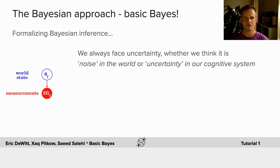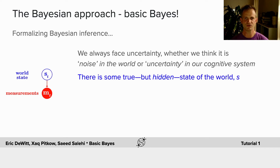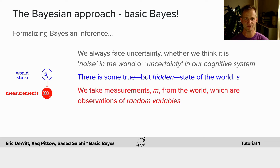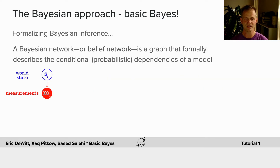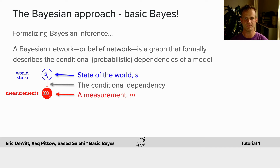We want to think about the fact that we always face uncertainty. This uncertainty might be noise in the world or uncertainty in our cognitive system, but there's always some true but hidden state of the world — we'll call it S. We can take measurements from the world which are observations in the form of random variables. What we want to do is find out what the probability distribution is over the hidden state. We can formalize this by describing it as a Bayesian network or a belief network — a graph that formally describes the conditional probabilistic dependencies of a model. So there's the state of the world S, the conditional dependency, and a measurement M.